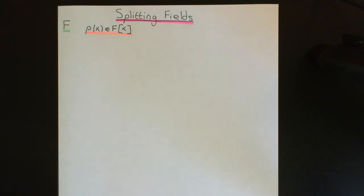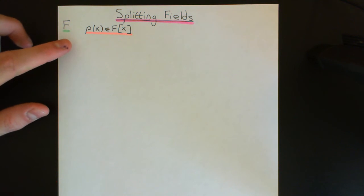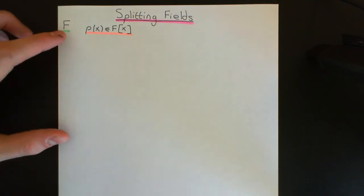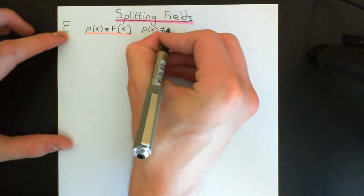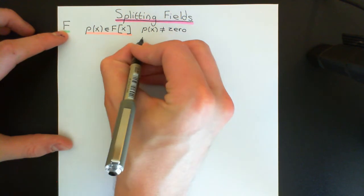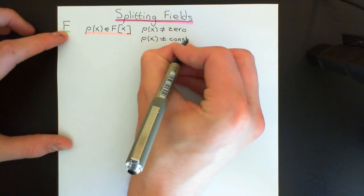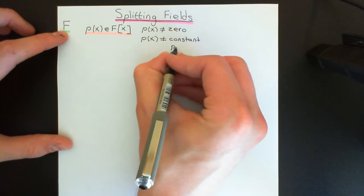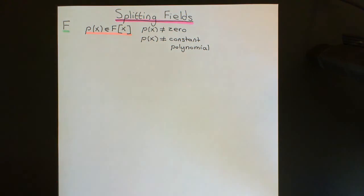We're now ready to define the splitting field of this polynomial P of X over the field capital F. This polynomial P of X we will assume is non-constant and non-zero, so it's degree one or higher. It's not equal to the zero polynomial, neither is it equal to a unit — a constant polynomial — because in a ring of polynomials over a field, it's the constant polynomials that are the units.